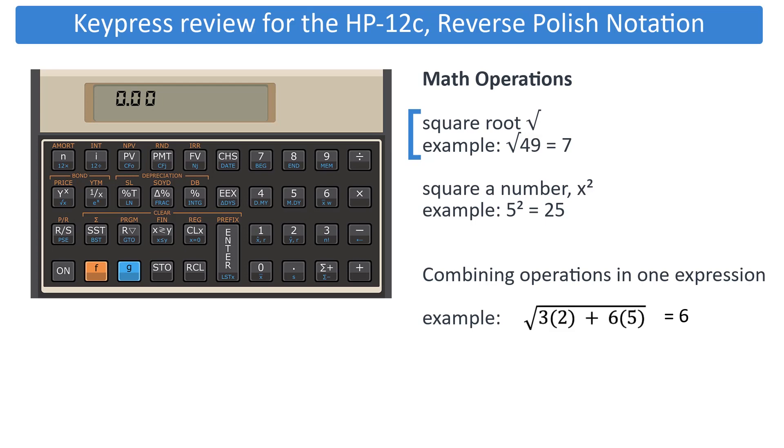As an example, finding the square root of 49 is fairly simple. Type in 49, blue prefix, and then square root. It acts on whatever number is on the display.